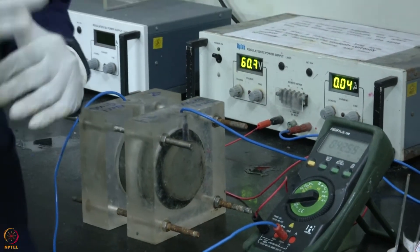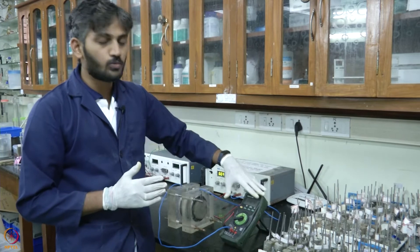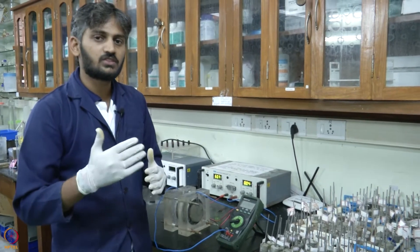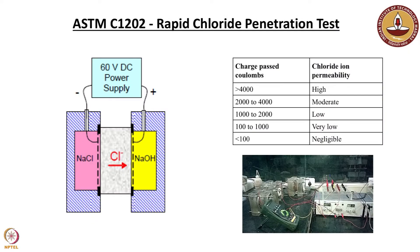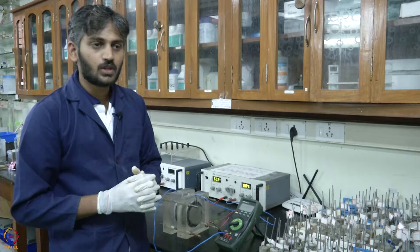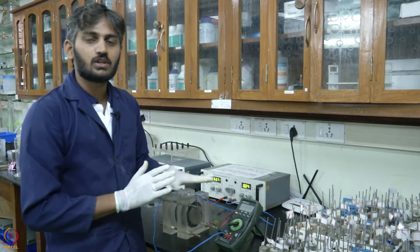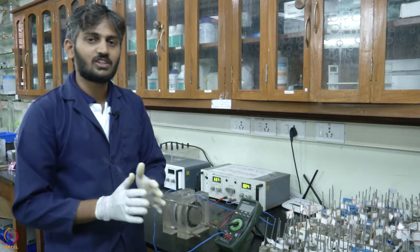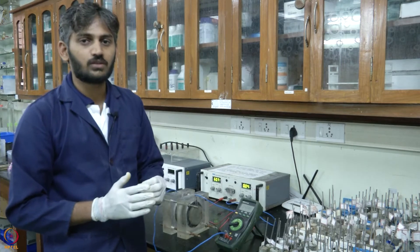The charge passed has different categories. ASTM C 1202 has classified that if a cumulative charge passed is less than 4000 coulombs the concrete is acceptable, less than 2000 the concrete is of good quality, less than 1000 it has very high resistance to permeability, and less than 100 cumulative charge passed means the concrete has very low permeability. Though the measurement is purely electrical, this gives a qualitative classification of concrete quality.